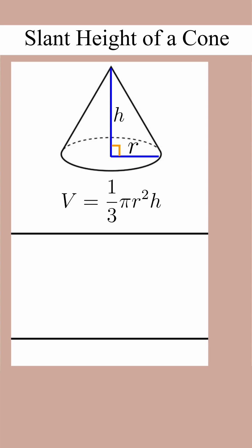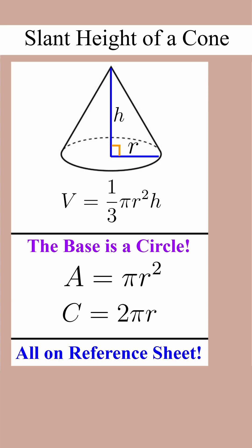The diagram of a cone looks like this, where r is the radius and h is the height. The volume is equal to one-third pi r squared h. And don't forget, the base of the cone is a circle, so you should remember important circle formulas. All of this you can find on the reference sheet.